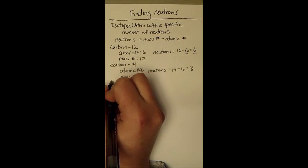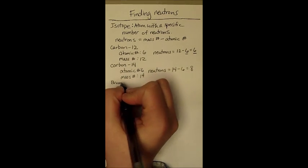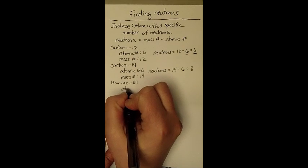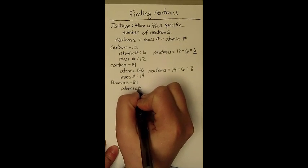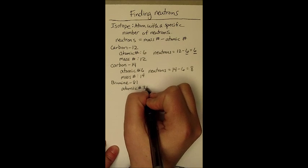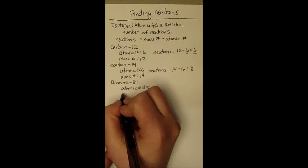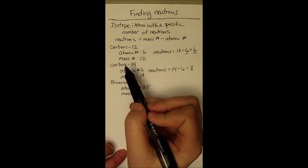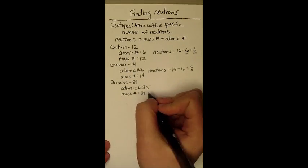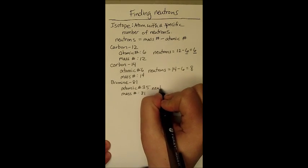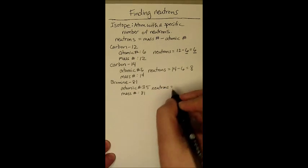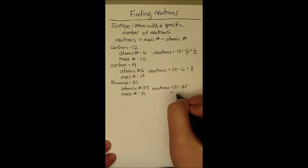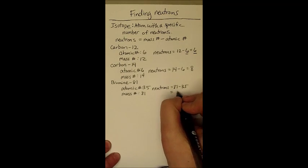Let's move on. Let's look at another element. Say bromine 81. The atomic number of bromine is 35. The mass number, meaning the number of protons plus neutrons, is 81, as we see. We end up with neutrons being 81 minus 35. So that gives us the total number of neutrons being 46.